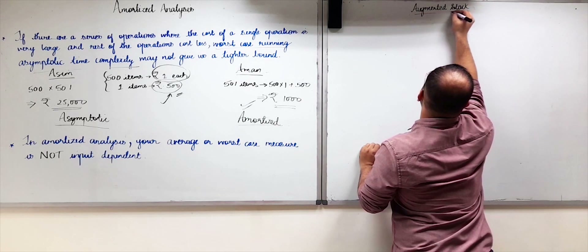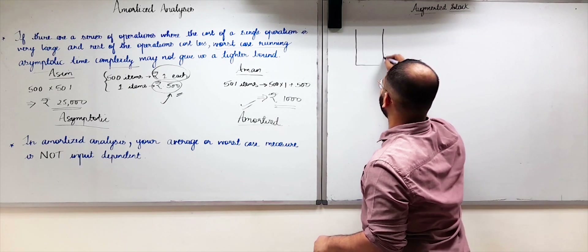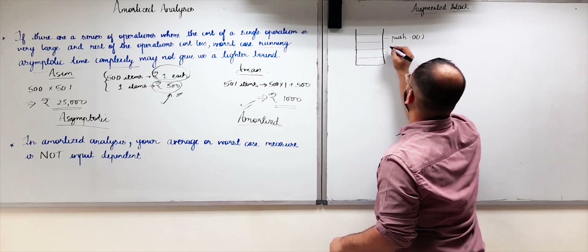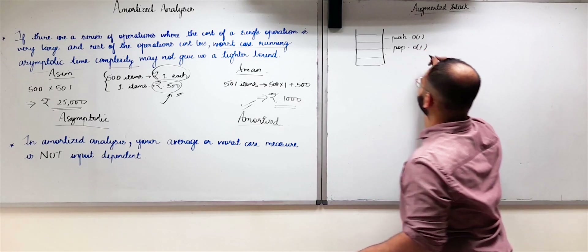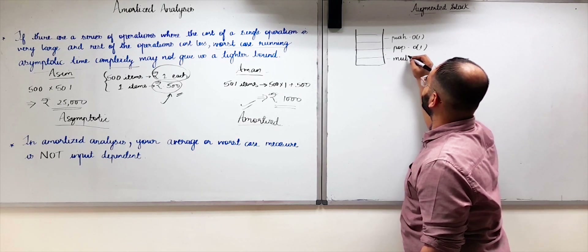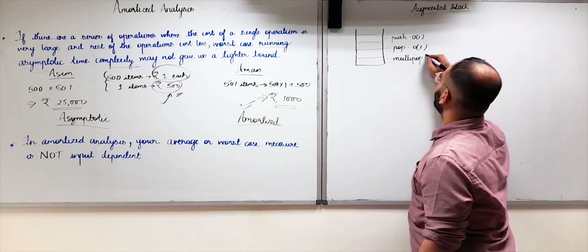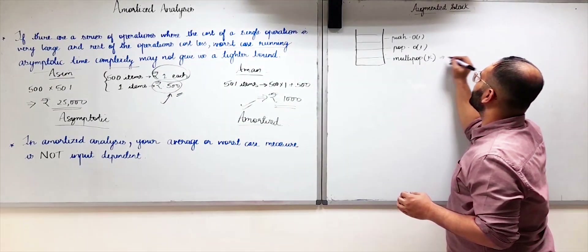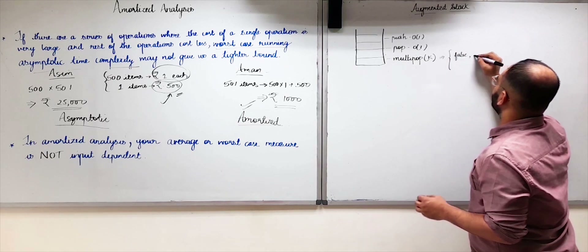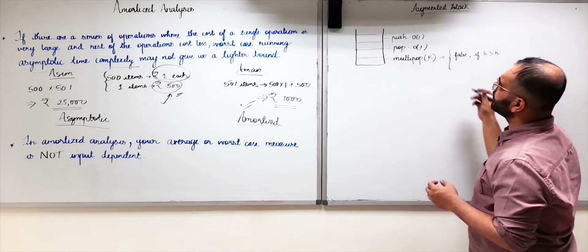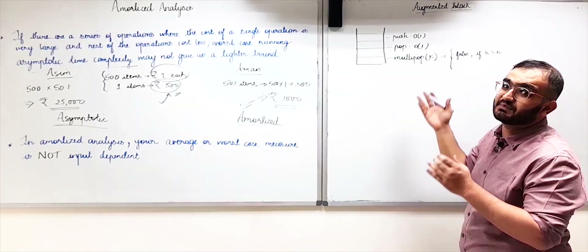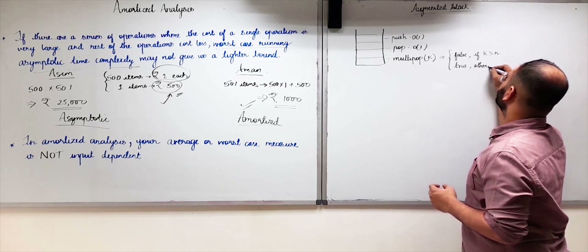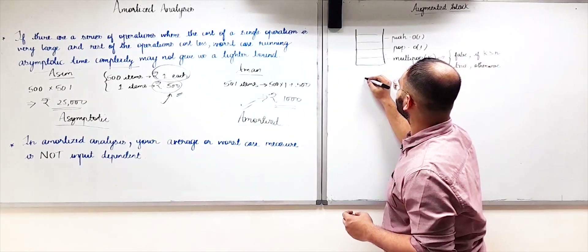Let us look at augmented stack. We will learn augmented data structures later in this playlist, but you may already know the normal stack, which has two operations: push with time complexity O(1), and pop with time complexity O(1). Now consider an additional operation in this augmented stack: multipop(k), where k is the number of elements to pop at once. Multipop(k) returns false if k is greater than n — since you can't pop more elements than are present — and returns true otherwise.